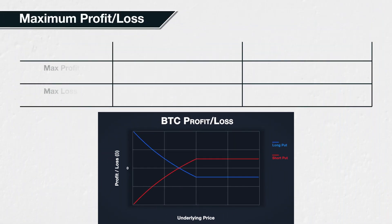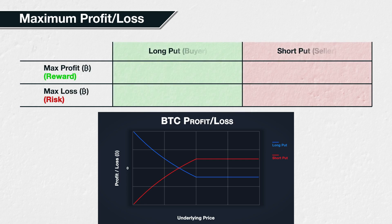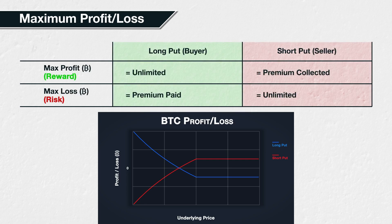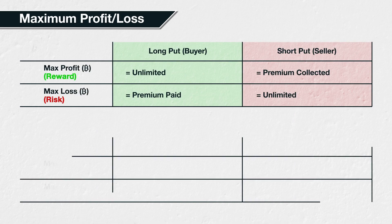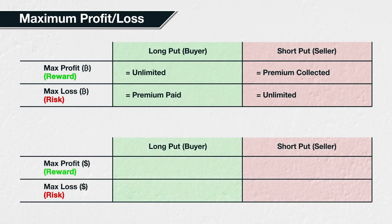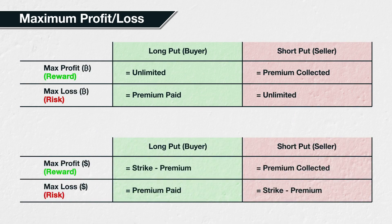This results in these maximum Bitcoin profit or loss formulas. It's worth noting again that if measured in dollars, these formulas for maximum profit or loss would be the same as the ones given in lecture 5.7. It's because we are measuring things in Bitcoin here, the base currency, that they are different.